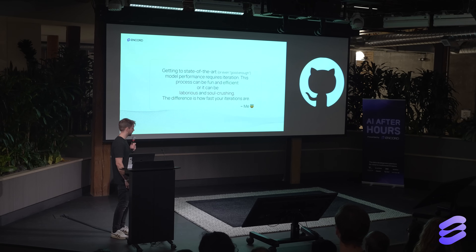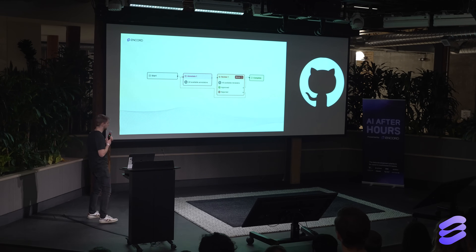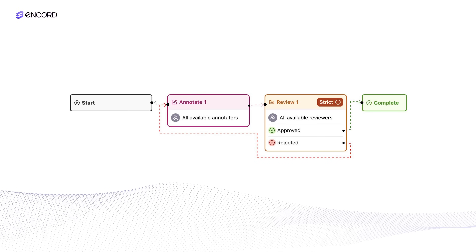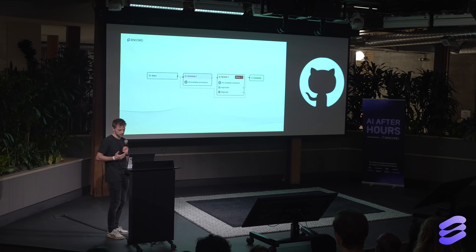The difference is how fast you're able to iterate. Typically this is what happens: if you think about the lifecycle of your data, data comes from a start, goes to some sort of human annotation, and then — if you really care about quality — it gets reviewed by other people. Eventually it becomes complete and you can start training your model. This is very, very labor intensive.